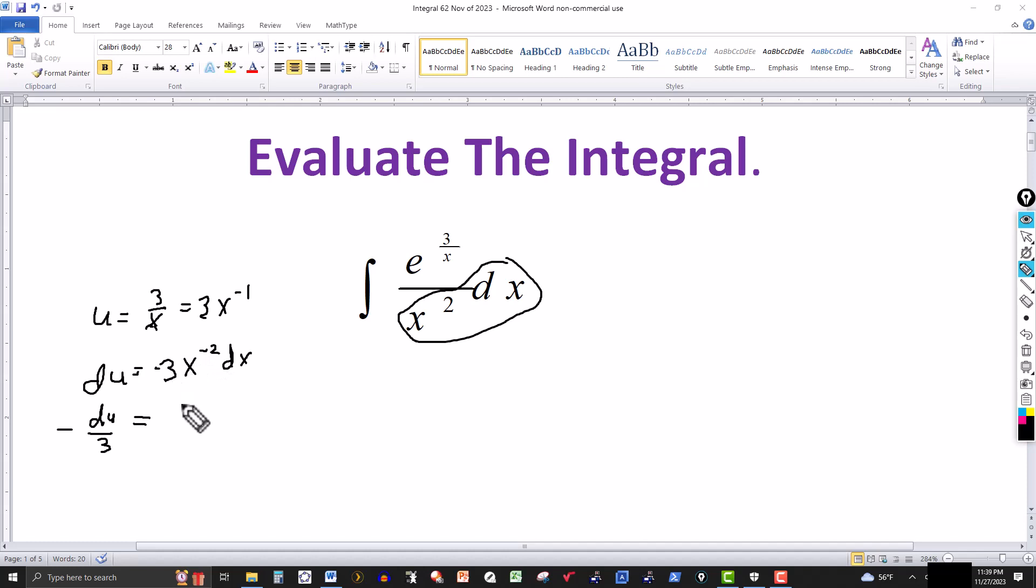The negative 3 got divided out, so x to the negative, got negative 3 then canceled, and then x to the negative 2 can be written as 1 over x squared. So I'll just write it under the dx, then I go back over here to my main integral here.